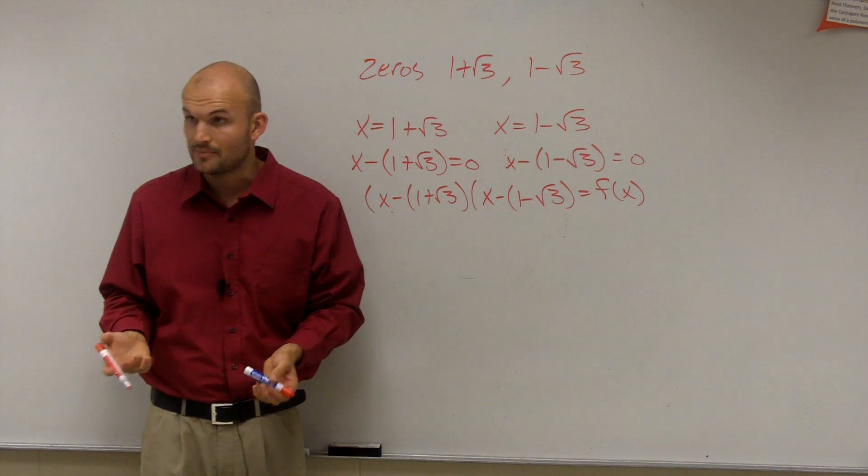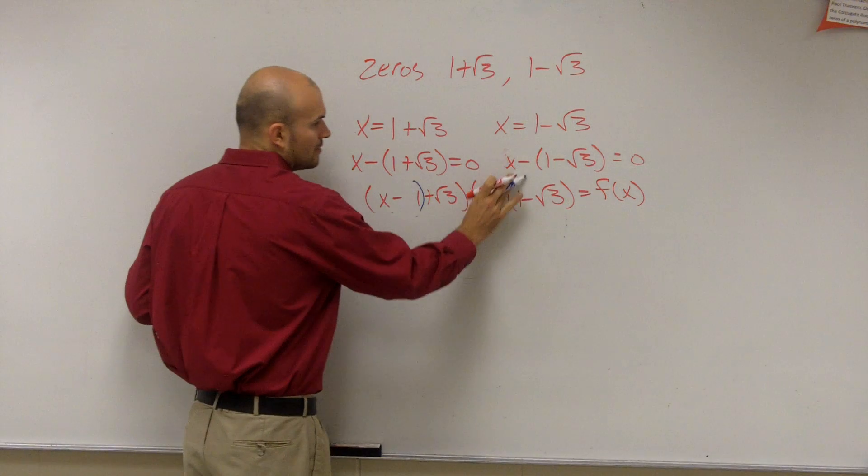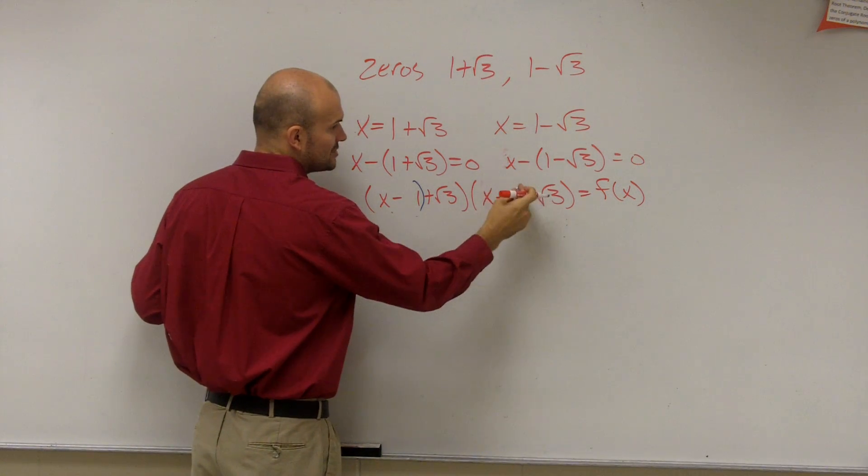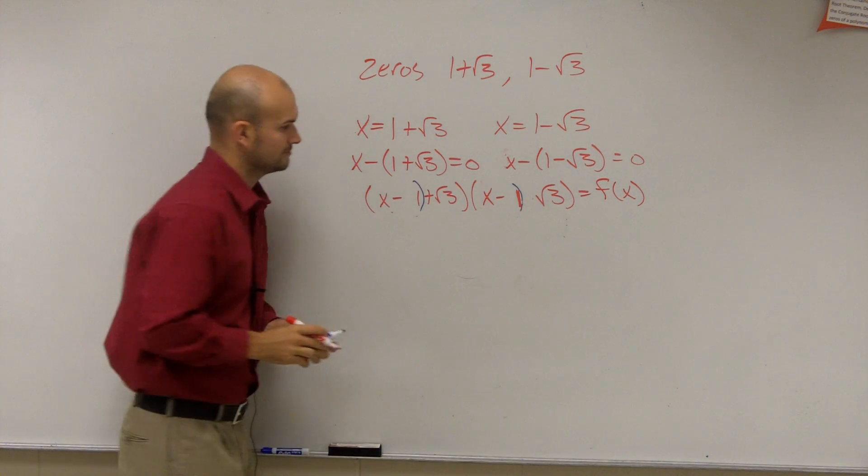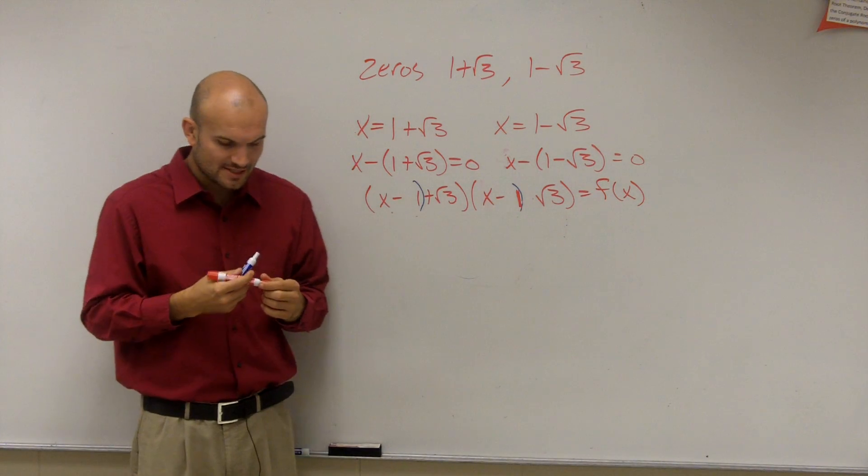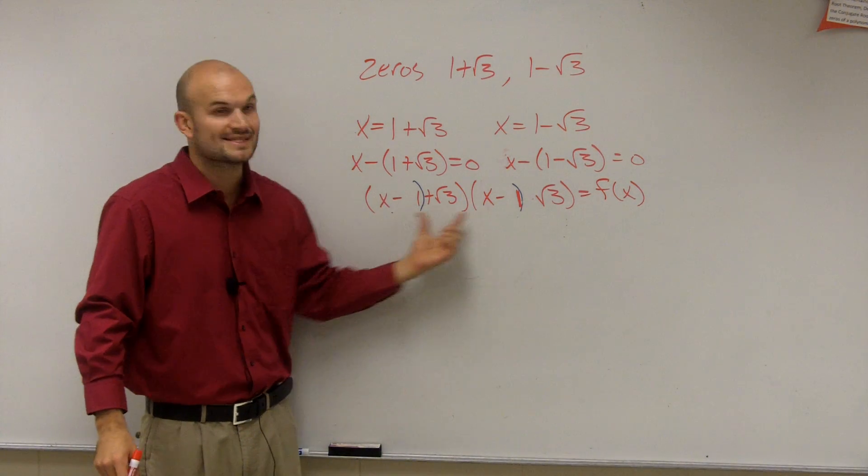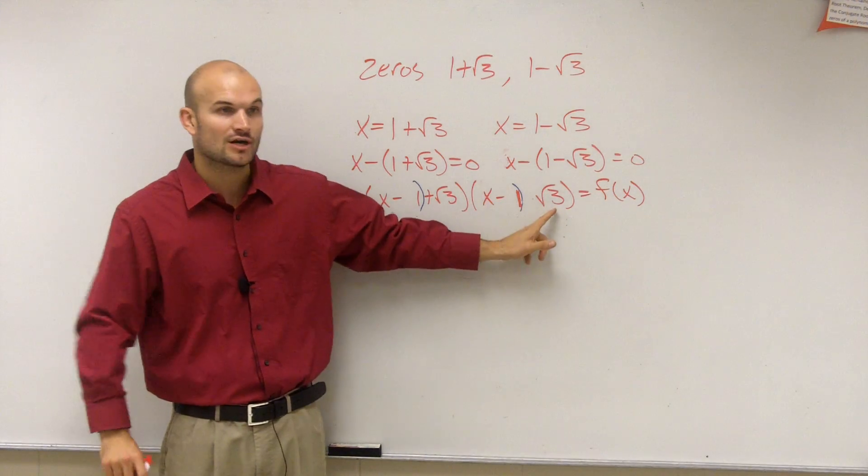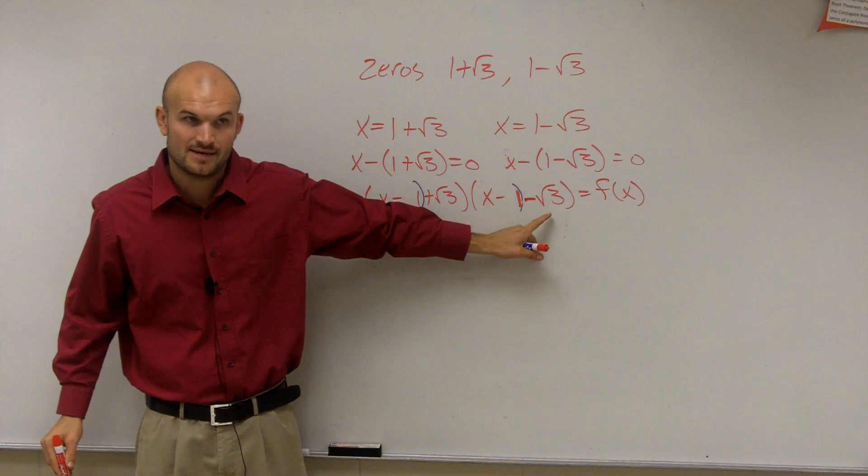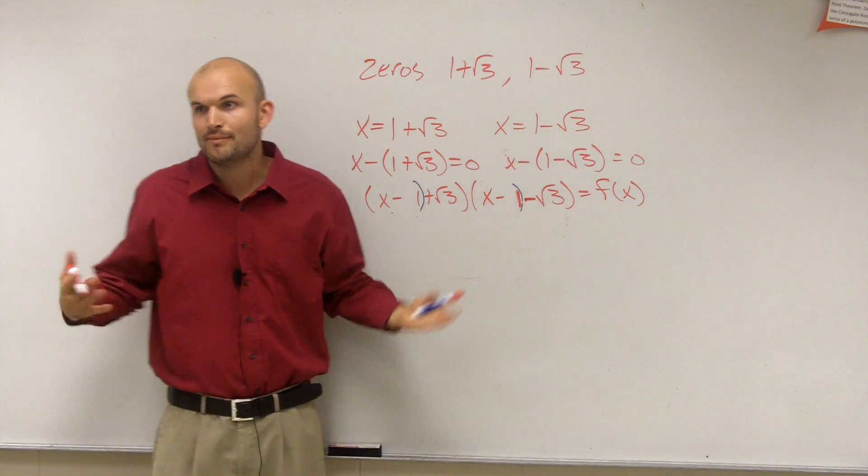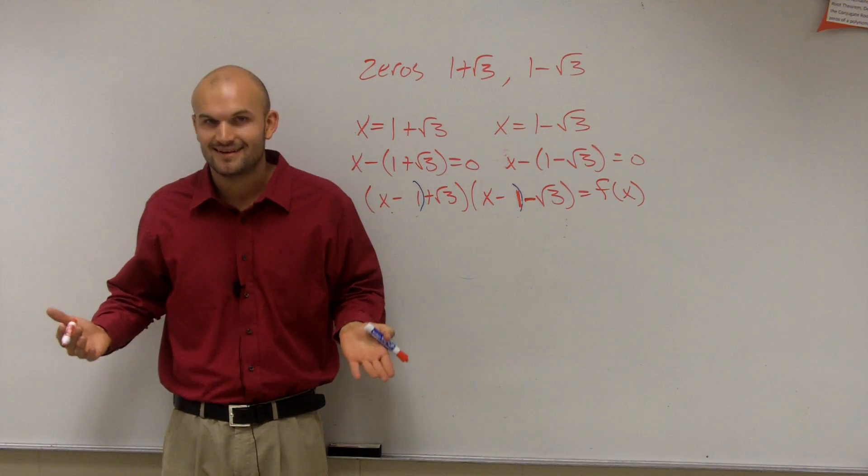One thing we can do is use the associative property. And what I'm going to do is I'm going to rewrite my parentheses to include, instead of the last two terms as a binomial, I'm going to write the first two terms as a binomial. And the reason why I wanted to do that is because the first two terms, when I write them as a binomial, are exactly the same. And now the last two terms are exactly the same, but I have a difference of signs. Does anybody remember when you have the first two terms the same, the last two terms the same, and a difference of signs, what we call that?